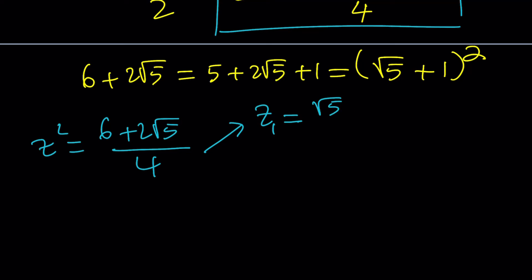Then my z sub 1 is root 5 plus 1 over 2, and z sub 2 is just the opposite because the complex square roots of a complex number are opposites, w1 and negative w1.